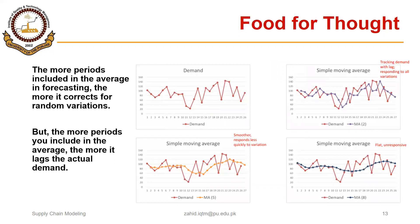This can be illustrated with an example. The demand data has a lot of random variations. If we use a smaller value of n, say 2, the forecast responds very well to changes in demand — the forecast is more responsive. If we increase n to 5, the forecast values do not respond as well to changes in demand; they are closer to each other. If we further increase n to 8, the forecast is even less responsive to changes in demand, but the forecast values are closer to each other.